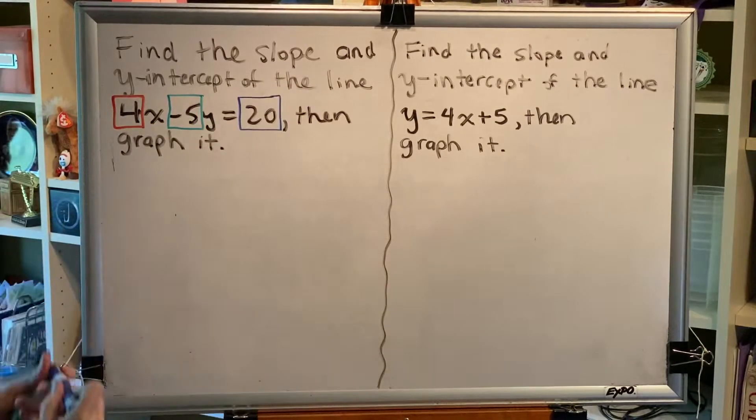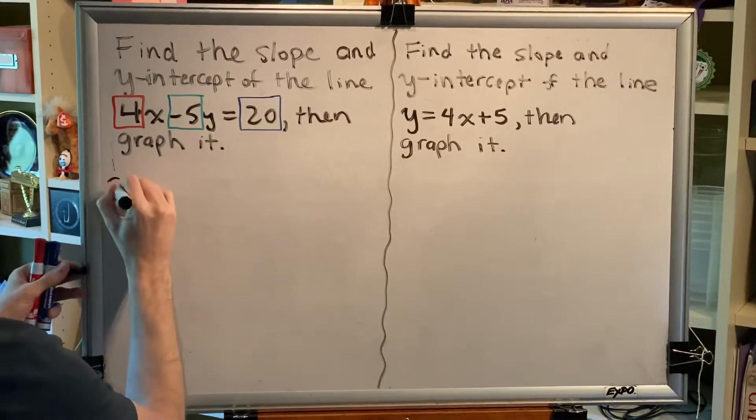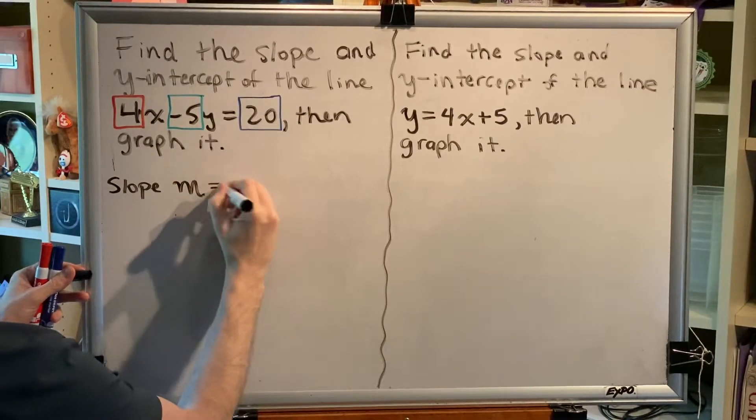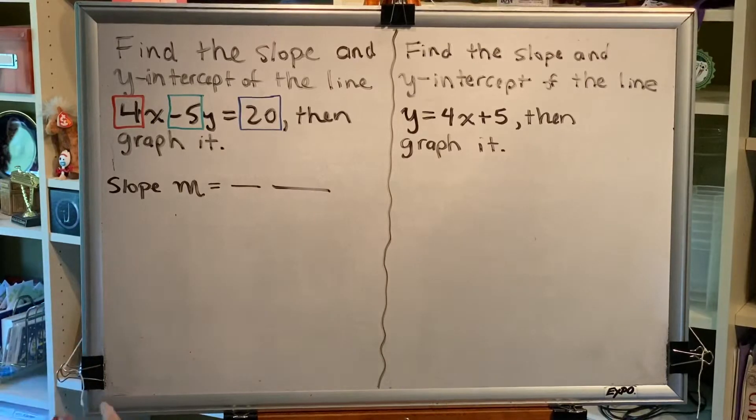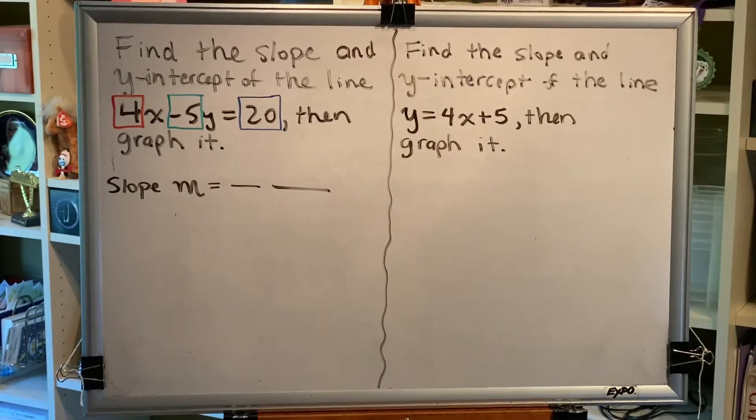And we can use our formulas to come up with the information that we're looking for. Alright, first of all, the slope. Alright, the formula for the slope of a line in standard form is opposite a over b.